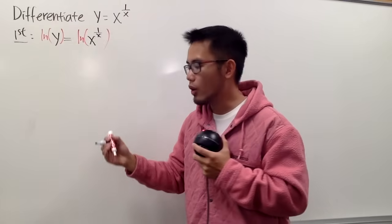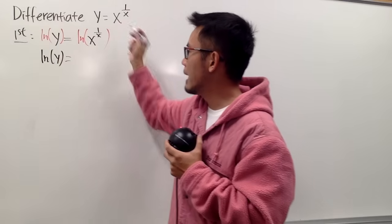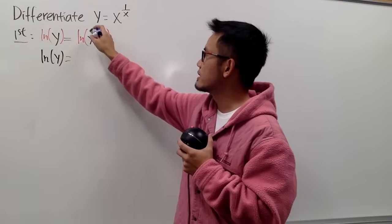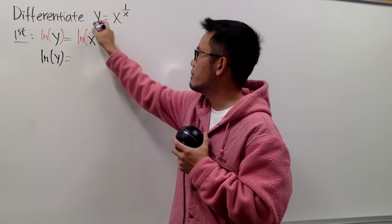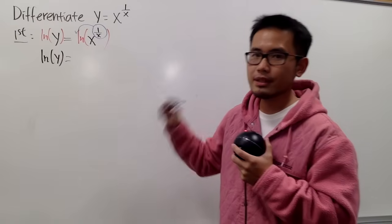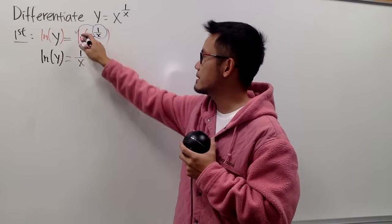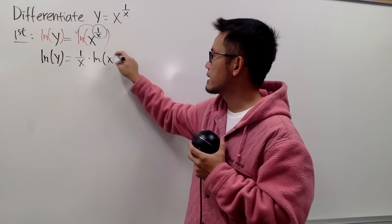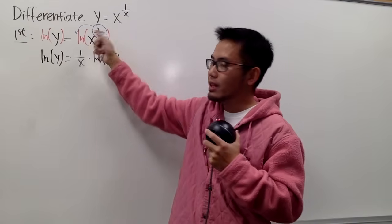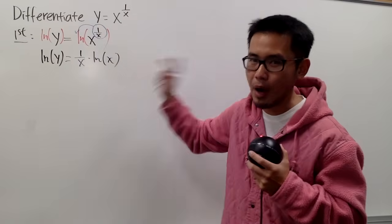On the left-hand side we will have ln y, but on the right-hand side the power is 1 over x. By the ln property, we can bring that to the front, so we will have 1 over x times ln of x. This is just by one of the ln properties — you don't subtract 1. This is not a power rule for derivatives.